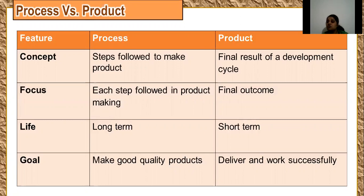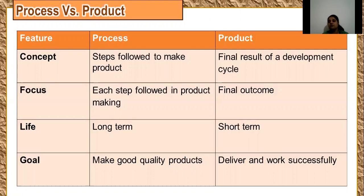A product is a very short-term thing — after your delivery is made, that's it. The goal of a process is to help you make a good-quality product that excels in quality and is made on time. A product is something you need to deliver, and it should work successfully without any failures. That's all for this chapter.